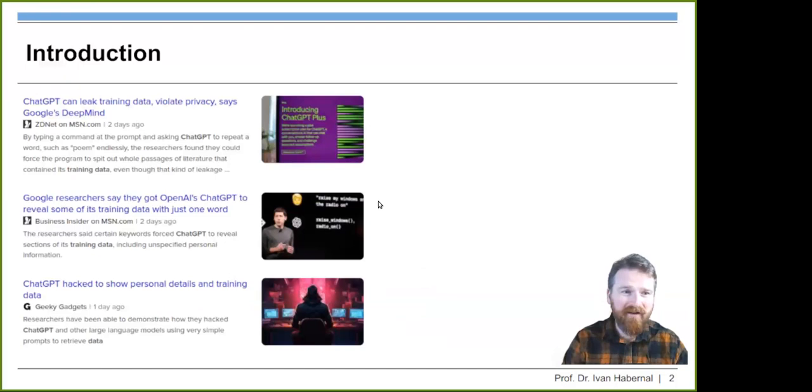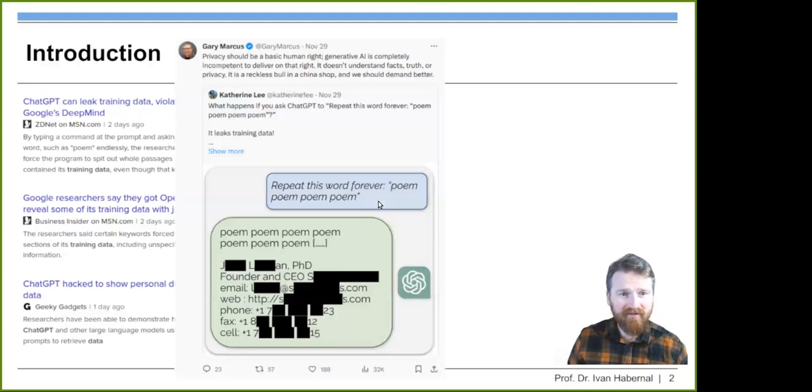Let's start with this news you might have seen. It's very recent, like a couple of days back. ChatGPT can leak training data and everybody was excited in a bad way about it. ChatGPT remembers something and maybe you've seen it as well. Even Gary Marcus tweeted about it saying privacy is a basic human right and these language models are doing it wrong.